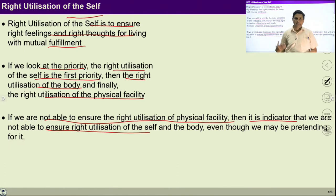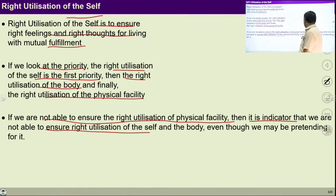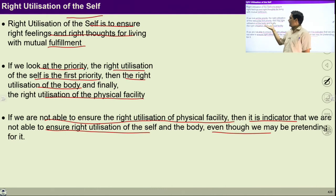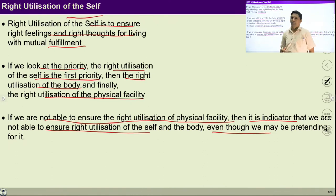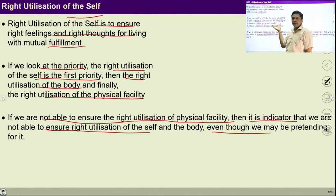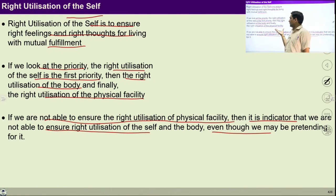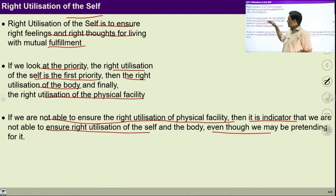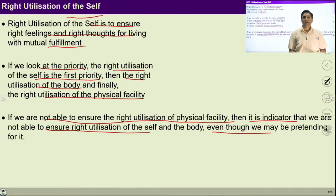If we are not able to ensure the right utilization of physical facility, it is an indicator that we are not able to ensure right utilization of the self also. This is an indicator: if a person is not able to ensure right utilization of the self and body, it means that person does not have right understanding in the self. With the right utilization of the self, I can right utilize my body, and with the right utilization of body and self, I can ensure right utilization of the physical facility. So, right utilization of self is at first priority, then right utilization of body, then right utilization of physical facility.